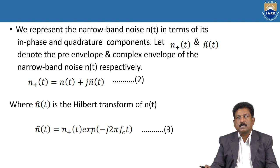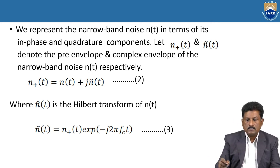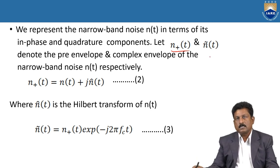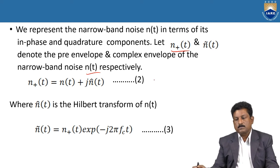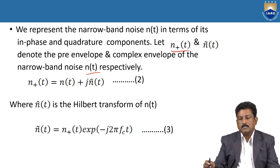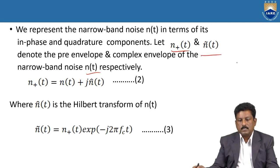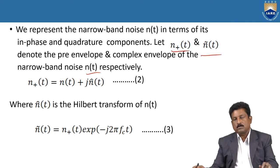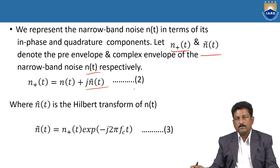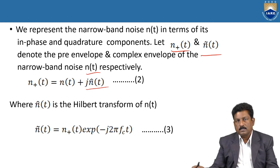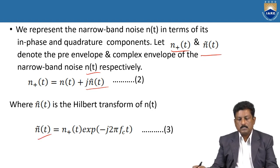We represent the Narrowband Noise n(t) in terms of its In-Phase and Quadrature-Phase components. We assume that n₊(t) is the pre-envelope and n̄(t) is the complex envelope of the Narrowband Noise n(t), respectively. Overall, n₊(t) = n(t) + j·n̂(t), where n̂(t) is the Hilbert transform of the original n(t). And n̄(t) = n₊(t)·e^(−j2πfc·t).